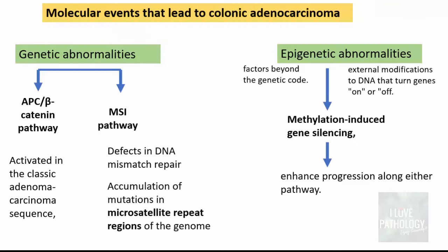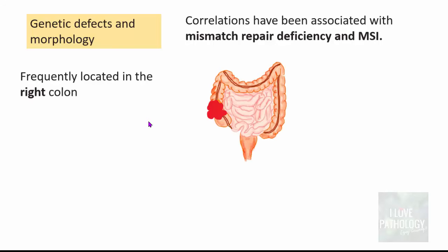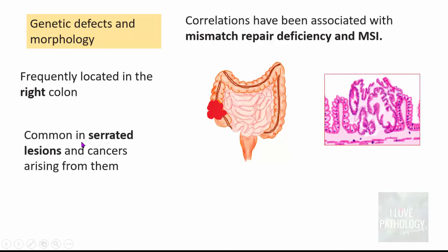To simplify: there are genetic abnormalities — the APC beta-catenin pathway or the MSI pathway — and epigenetic abnormalities, which involve methylation or hypermethylation resulting in gene silencing. The APC beta-catenin pathway is activated in the classic adenoma-carcinoma sequence; MSI means microsatellite instability. Regarding the association between genetic defects and cancer morphology, malignancies with mismatch repair deficiency and microsatellite instability are frequently located on the right side of the colon and are common in serrated lesions and cancers arising from serrated lesions.